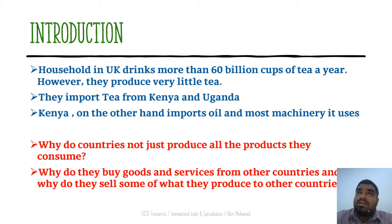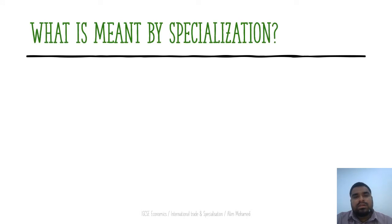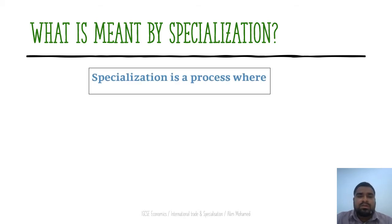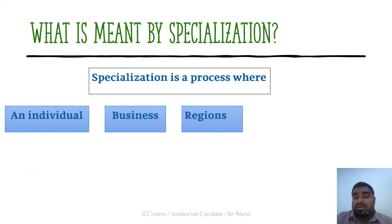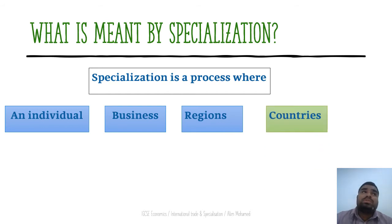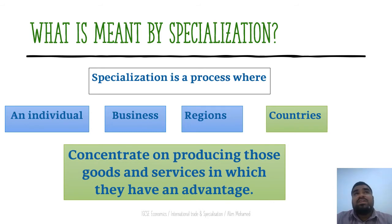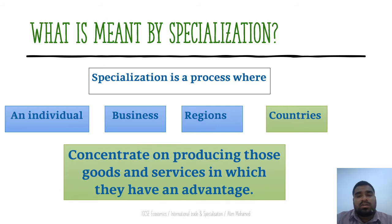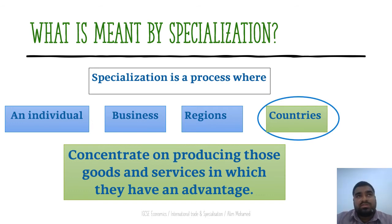International specialization is a process where an individual, business, or a country concentrates on producing particular goods or services in which they have an advantage. Like individual specialization in division of labor, we are interested in countries concentrating on one particular good or service — this is international specialization.